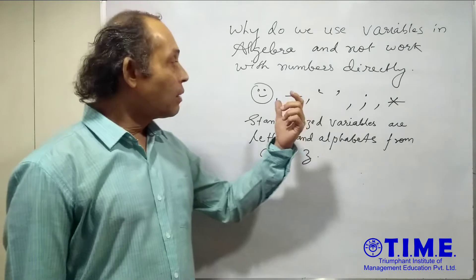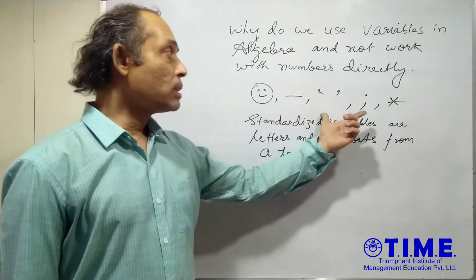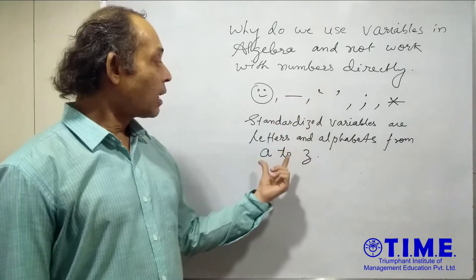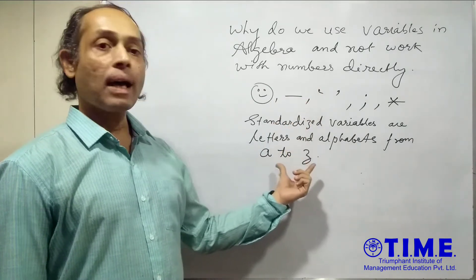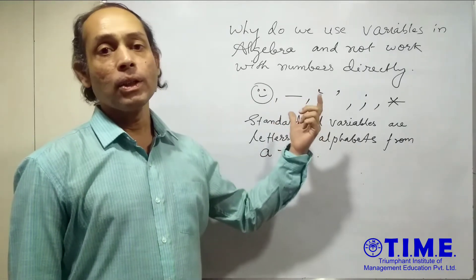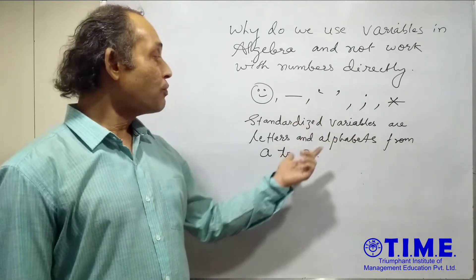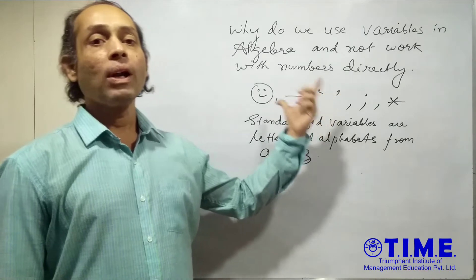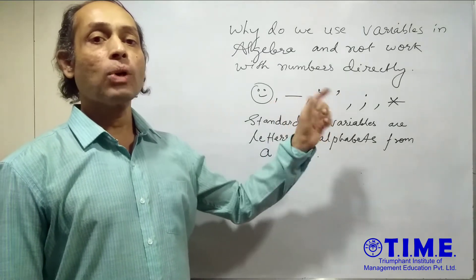And we avoid these type of variables because these are not the standardized variables. These alphabets from A to Z have been standardized for the use of variables. In place of these particular alphabets, if you use these characters, what will happen is, it will make the equations look a bit confusing.